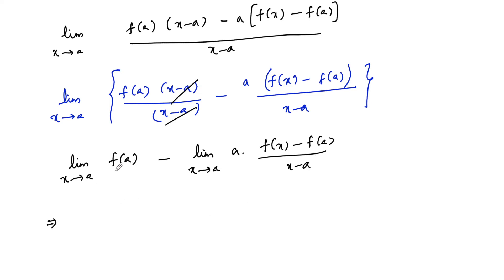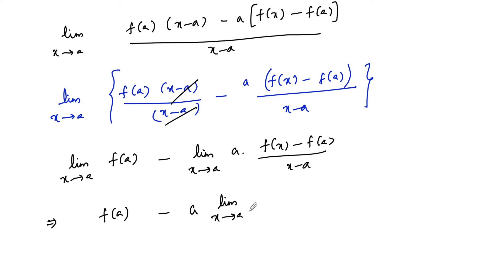Here f(a) is independent of x, so it is a constant. We can write f(a) minus, and by using algebra of limits we can take a separately outside: a into limit x tends to a of f(x) minus f(a) upon x minus a.